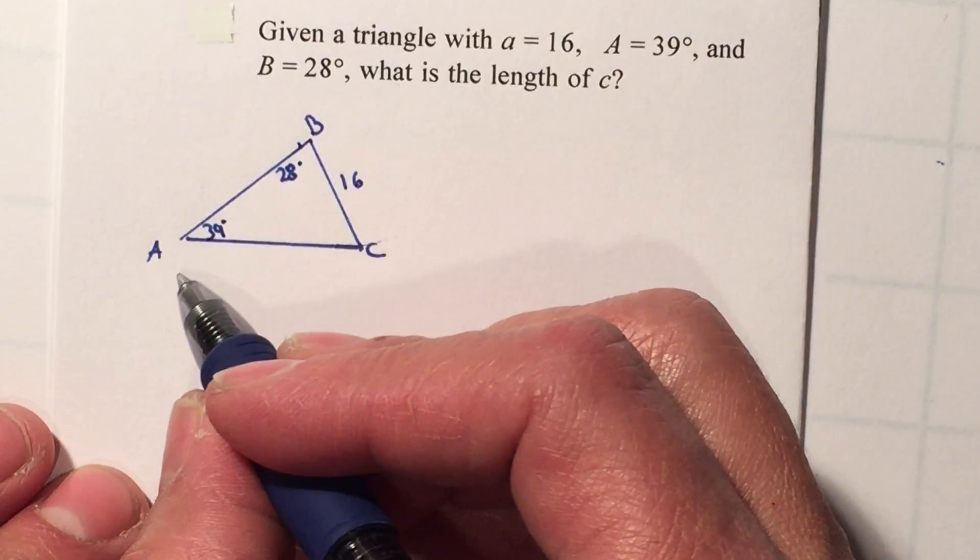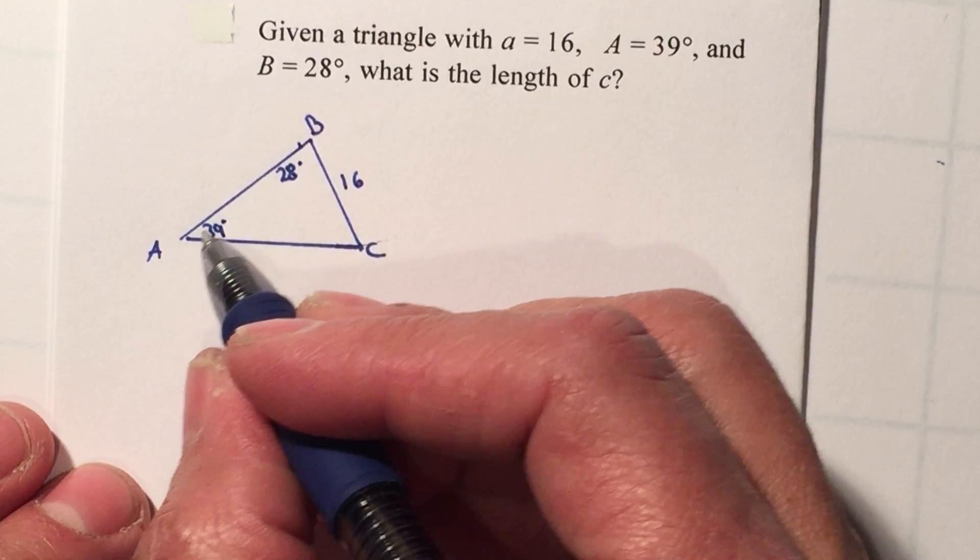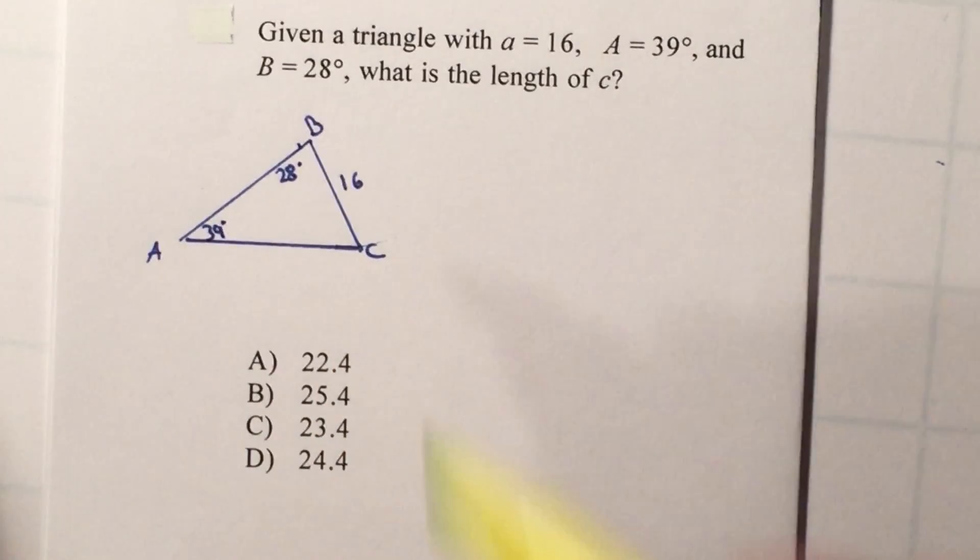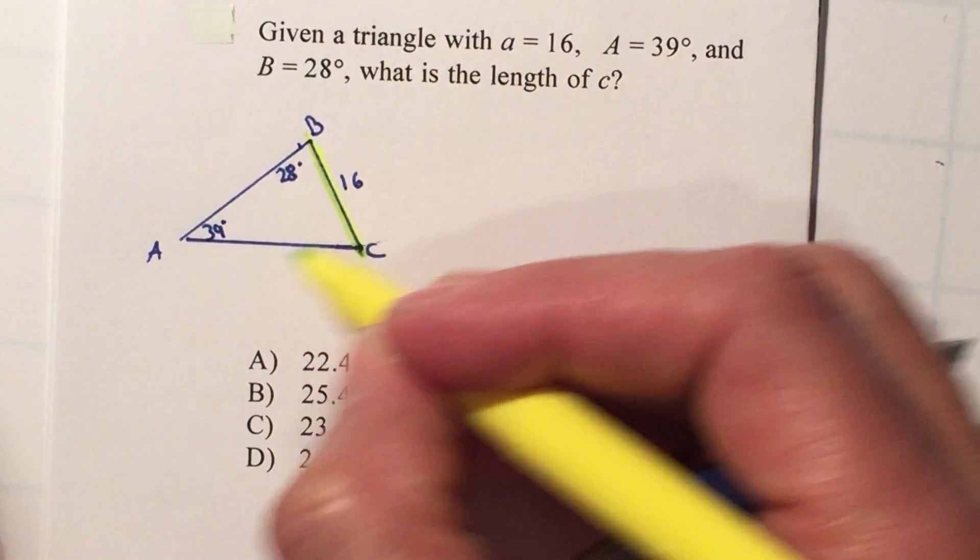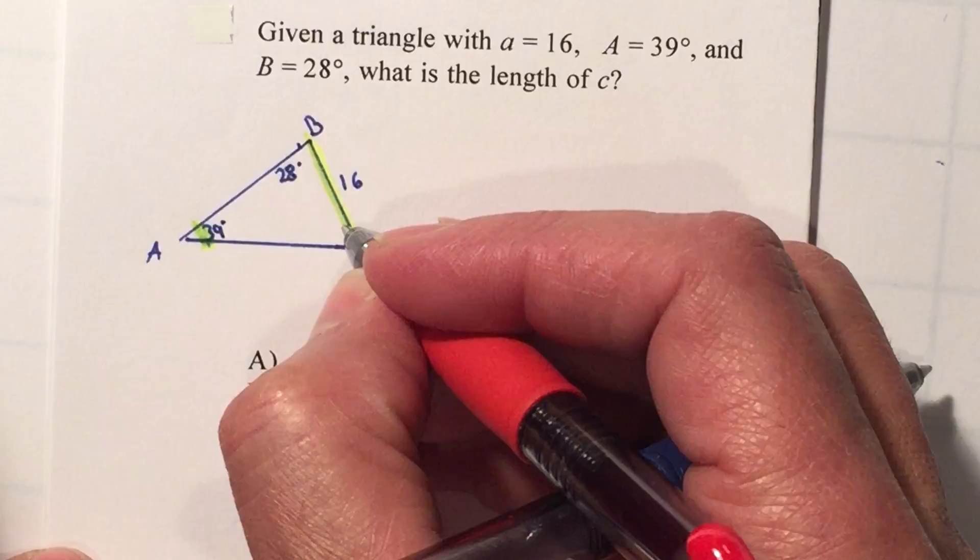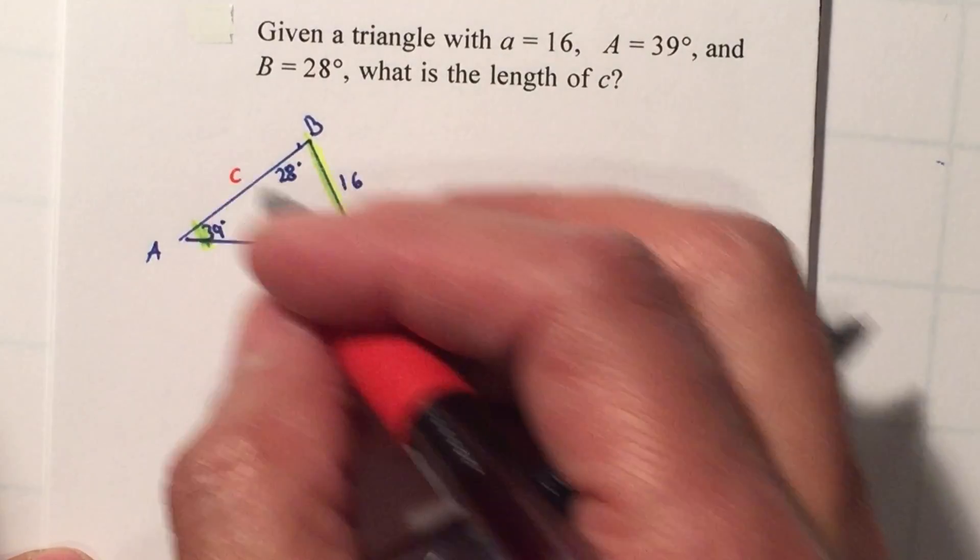Since I know a side and its opposite angle, I can use Law of Sines. But in this case I need to find this angle here so I can find letter C. That way I can use Law of Sines.